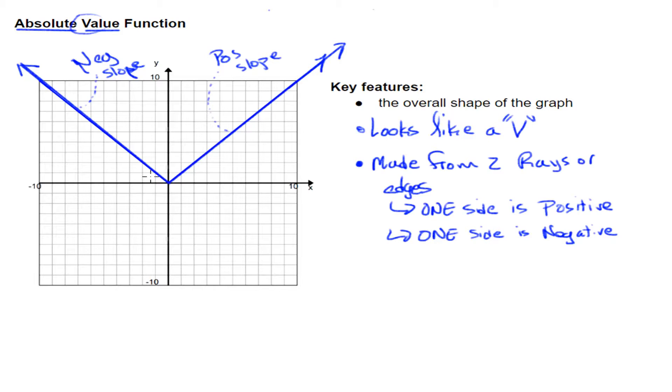Now, this isn't the only absolute value function we could have. We could have one that is upside down like this, coming down here. Does this still pass everything? Yes, it looks like a V. Yes, it's made from two rays. One side is the positive ray, one side is the negative ray. What if I took this same one and slid it over? Does this still follow the rules? Looks like a V, made from two rays. So these are the key features of the shape of an absolute value function.